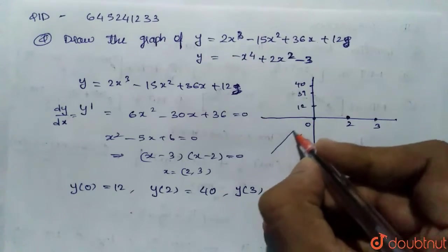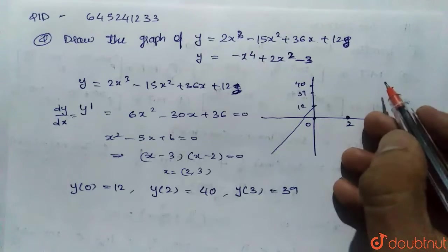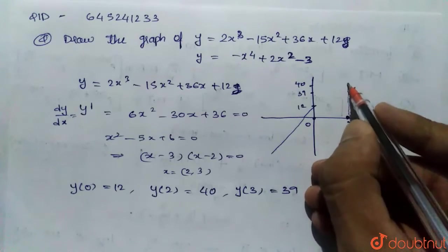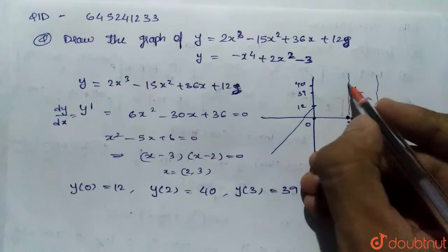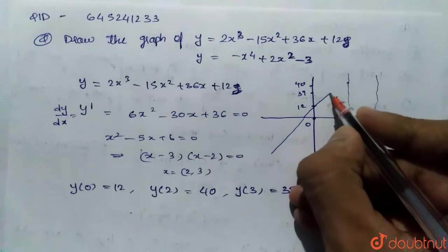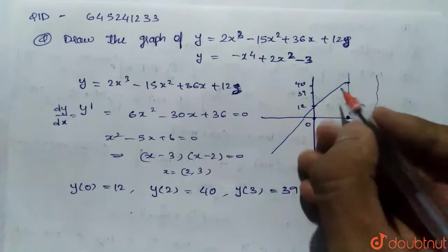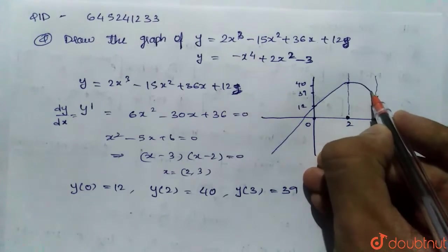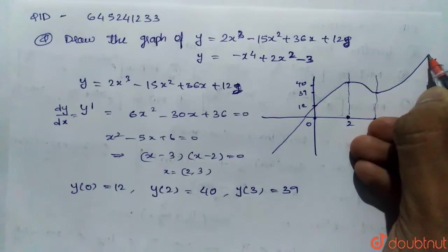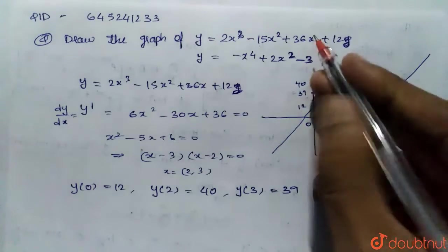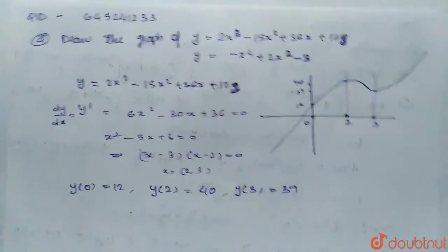The curve would be coming increasing and till x = 2, this would be 40. And here, it takes a sharp turn and further decreases till 39 and goes on increase till infinity. So, this would be the graph of first equation which we have seen.